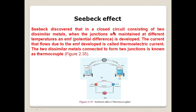Seebeck discovered that in a closed circuit consisting of two dissimilar metals, when the junctions are maintained at different temperatures, an EMF — that means potential difference — is developed. The current that flows due to this EMF is called thermoelectric current. The two dissimilar metals connected to form two junctions is known as a thermocouple. Thermo means heat, couple means two — two different junctions produce two different temperatures.